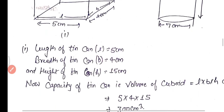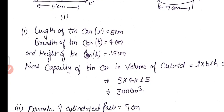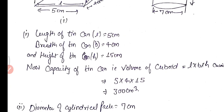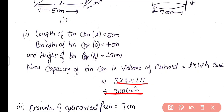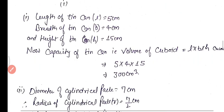For the tin can: length = 5 cm, breadth = 4 cm, height = 15 cm. The capacity of the tin can equals the volume of a cuboid = l × b × h = 5 × 4 × 15 = 300 cm³.